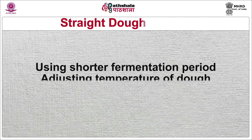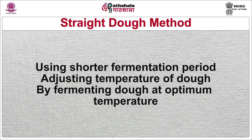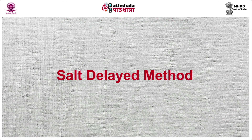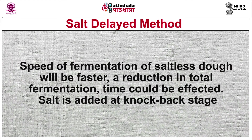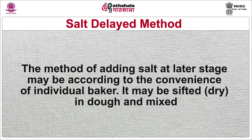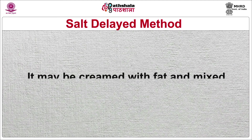It is very necessary to control temperature and it can be done by using a shorter fermentation period and adjusting temperature of dough by fermenting at optimum temperature. The second method is the salt delay method. This is a slight variation of the straight method where all ingredients are mixed except salt and fat. It has a controlling effect on enzymatic action of yeast. The speed of fermentation of saltless dough will be faster. Salt is added at the knock back stage. The method of adding salt at a later stage may be according to the convenience of the individual baker.